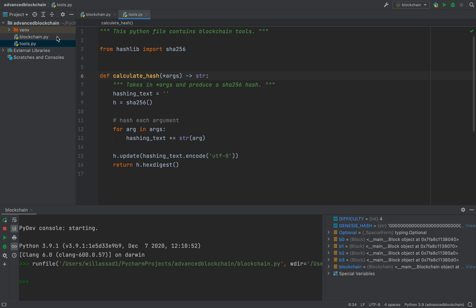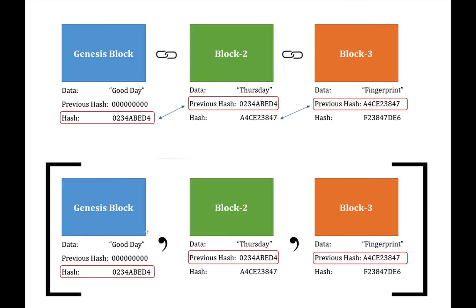Welcome back to another video. Today I'm going to be working on a more advanced version of the blockchain. In my previous video series, the way we had originally defined a blockchain was in terms of a list of blocks — we had a block, then another block, then another block. When we wanted to access the previous hash, we would go to the previous item in the list and calculate its hash. This is okay, but it's not really realistic and there are some problems with it.